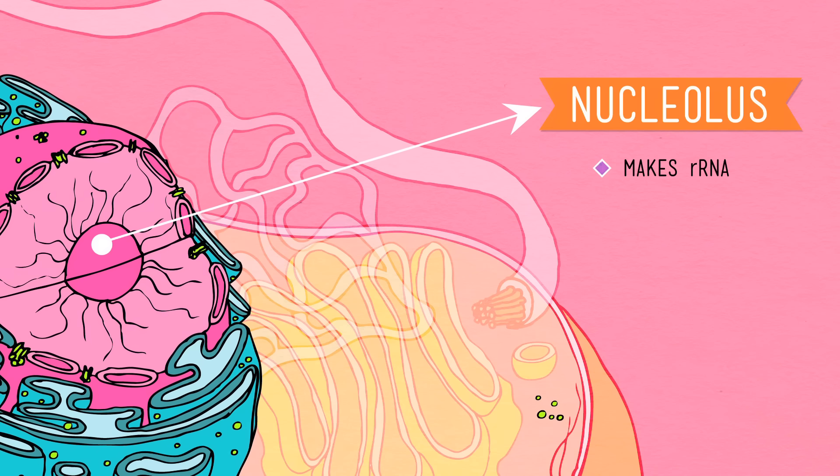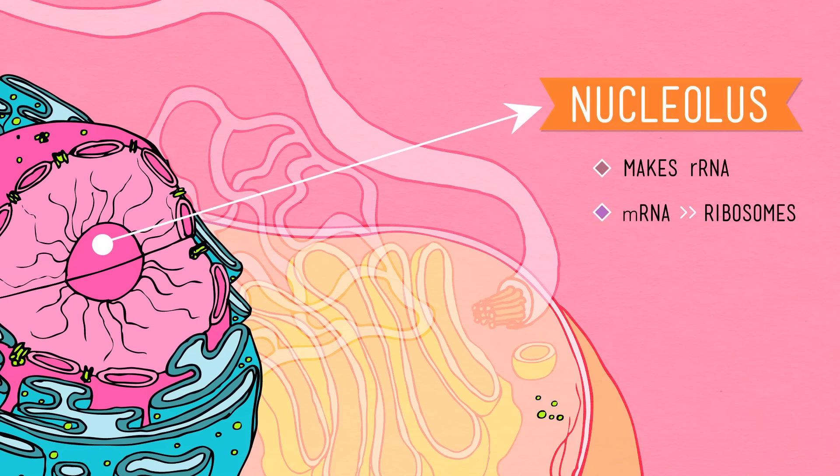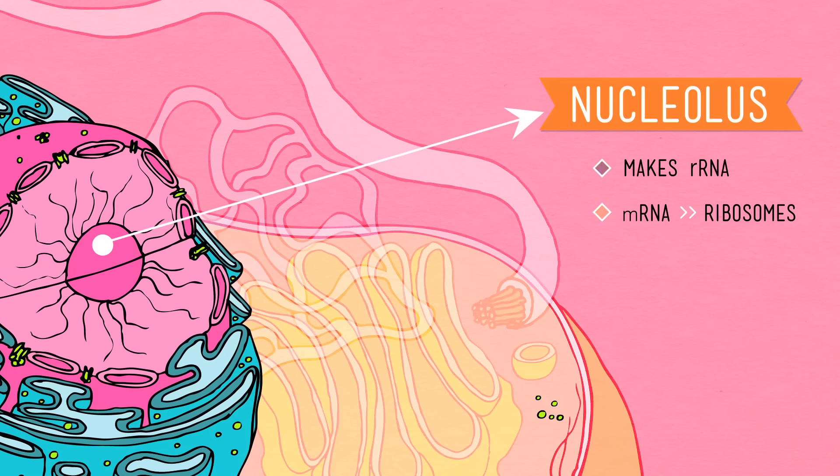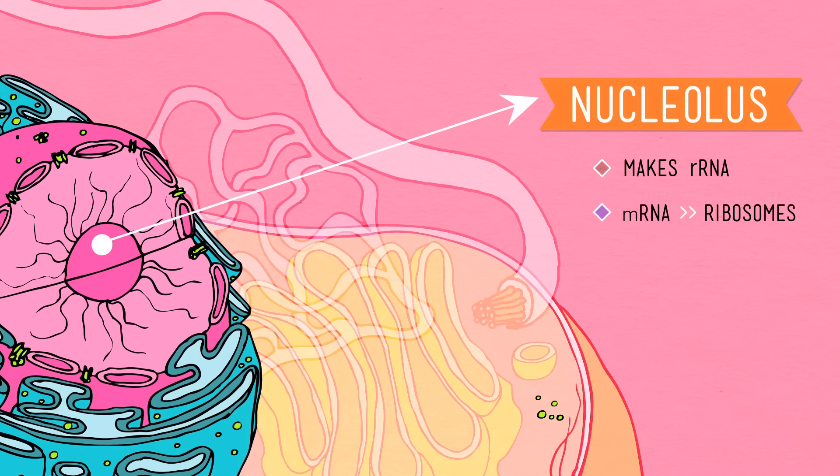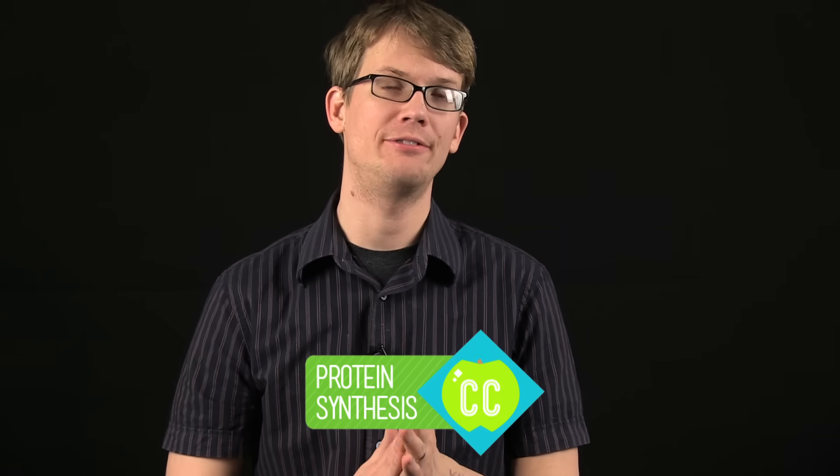The nucleus then sends orders in the form of messenger RNA, or mRNA, to those ribosomes, which are the henchmen that carry out the orders in the rest of the cell. How exactly the ribosomes do this is immensely complex and awesome. So awesome, in fact, that we're going to give it the full Crash Course treatment in an entire episode.